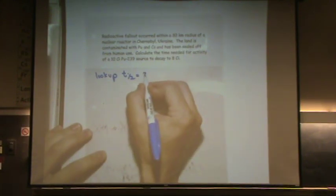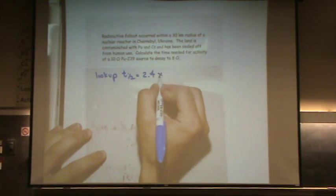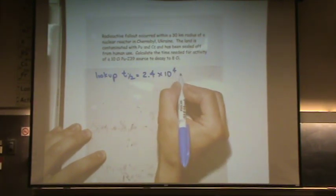One thing you would need to do for this problem is look up half-life. So you find this in your book. If it was an exam, it would be given to you. It would be on the back of the test. Something like that. And this is 2.4 times 10 to the 4 years.